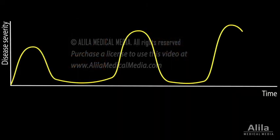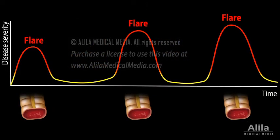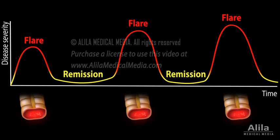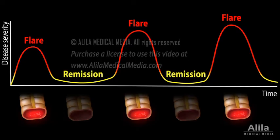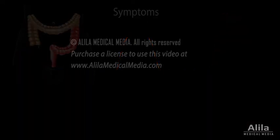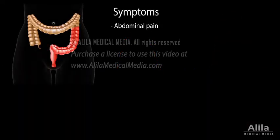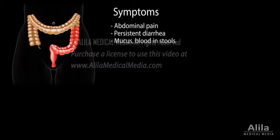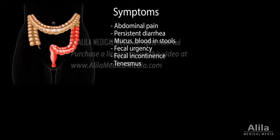The condition evolves in the form of recurrent flares, when new lesions form, followed by symptom-free periods of remission when these lesions heal. Typical symptoms include abdominal pain and persistent diarrhea, often with mucus and or blood. Some patients may experience fecal urgency, fecal incontinence, or tenesmus — the inability to move bowels in spite of the urge.